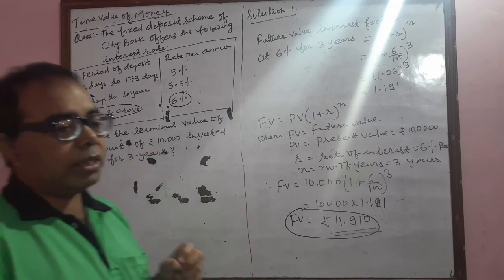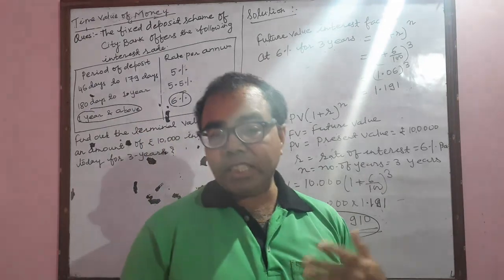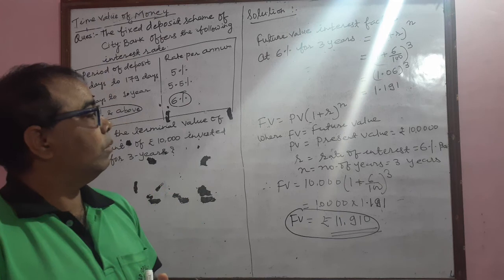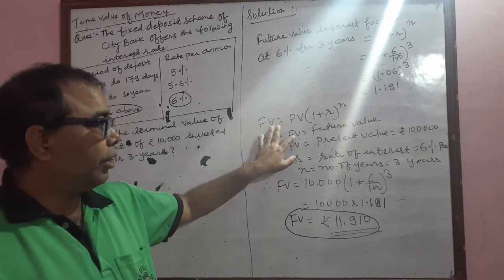If a person invested an amount of 10,000 for the next three years, how much will he get at the end of the third year? So if you see, future value equals present value into (1 + r) to the power n.